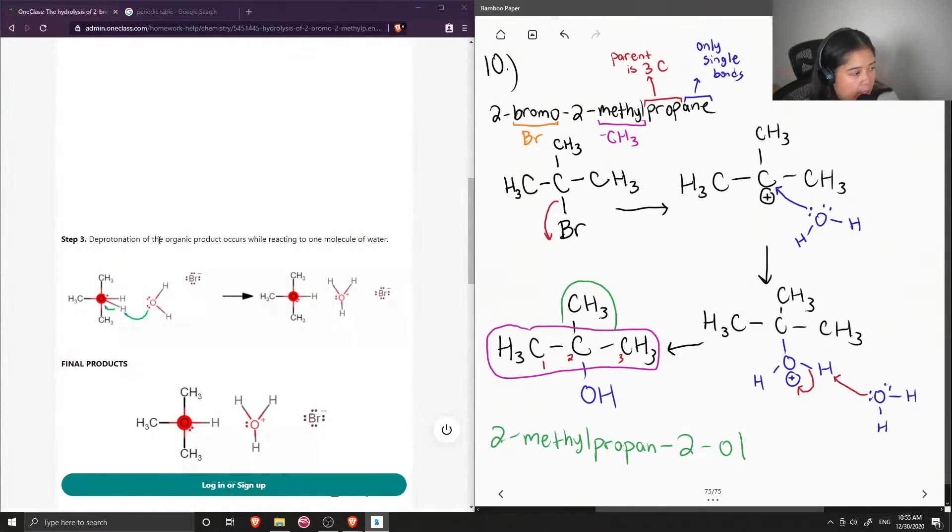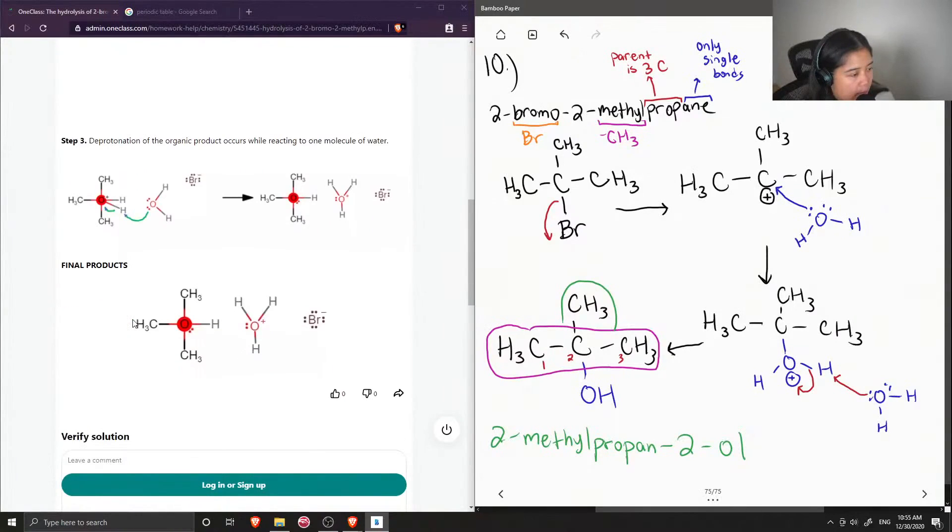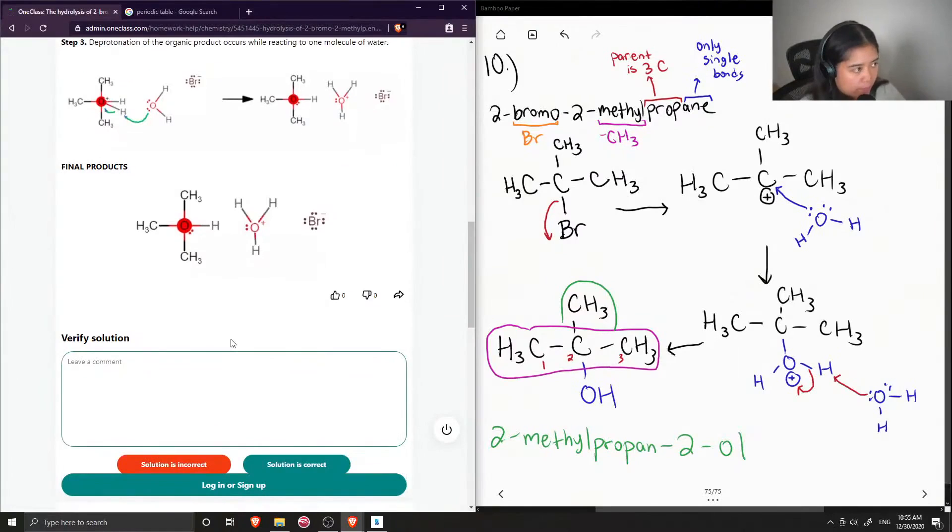Step 3: deprotonation of the organic product occurs while reacting to one molecule of water. So they have water coming in to deprotonate. So I don't know if they meant to put the oxygen in the middle like that, but there should be a carbon kind of like in between. So this explanation is correct and all the steps are correct as well.